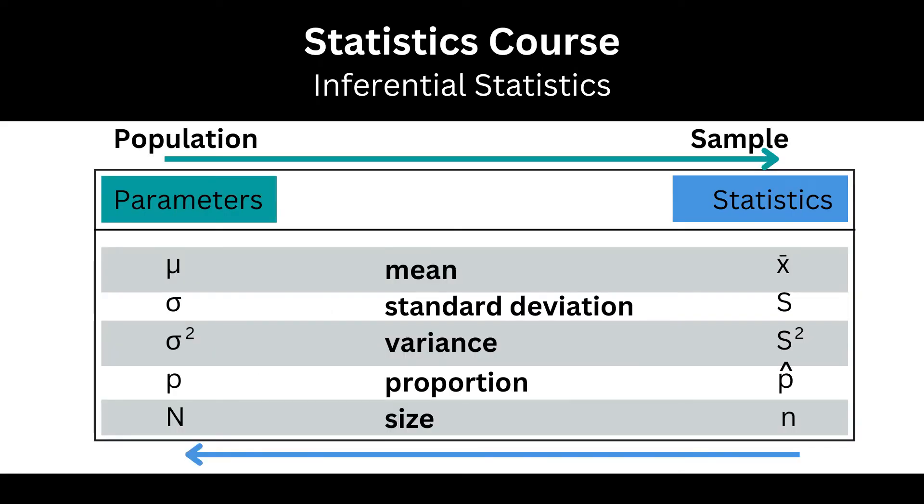Both the population and the sample have the same variables, but with different names and formulas. From the population side, we call these parameters.